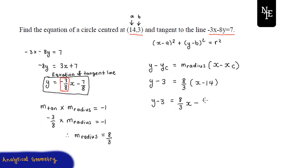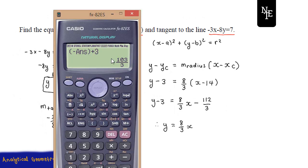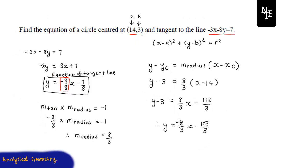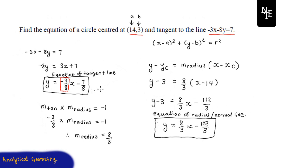Simplifying further: y = 8/3 x - 112/3 + 3, which gives us y = 8/3 x - 103/3. So this is the equation of our radius, which we'll call equation 2.